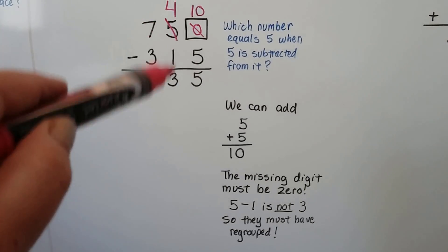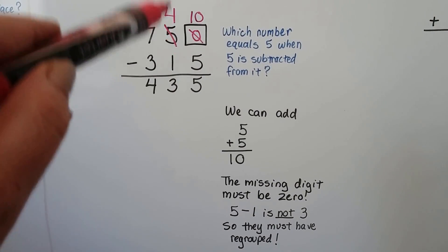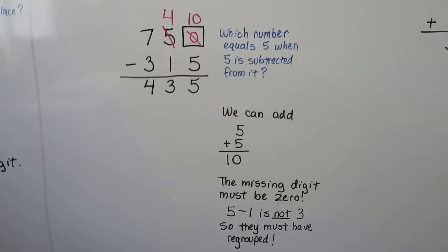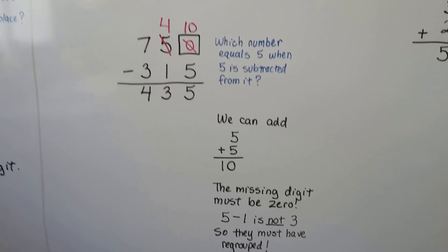The missing digit had to be a 0. 5 take away 1 is not 3. It had to have been a 4. That means they regrouped. Stick with me because I know this could be tricky.